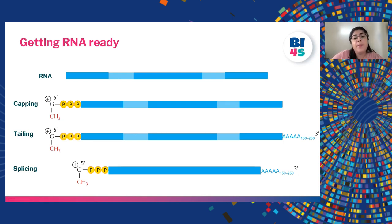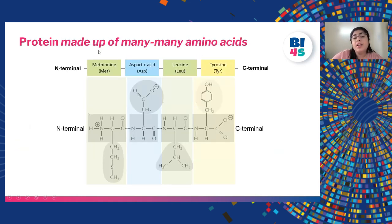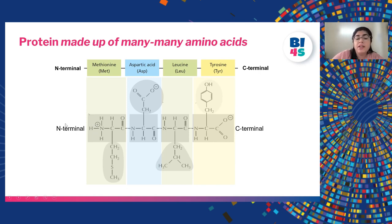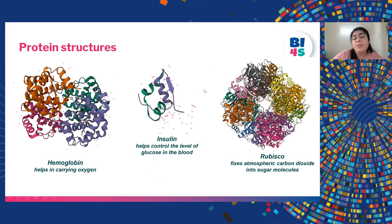Coming back to the central dogma, we have discussed replication and transcription. Now let's talk about translation, by which protein is made. Protein is made up of many amino acids — the building blocks of protein are very different from those of DNA and RNA. The amino acids of a protein also form a chain-like structure with two ends: the N-terminal at one end and the C-terminal at the other. Amino acids link together to form a polypeptide which folds itself to perform its function accurately.